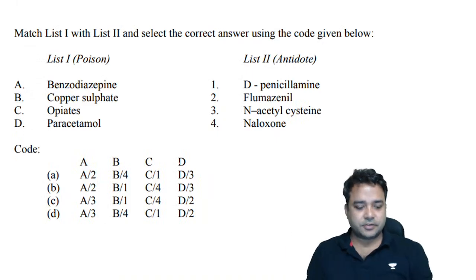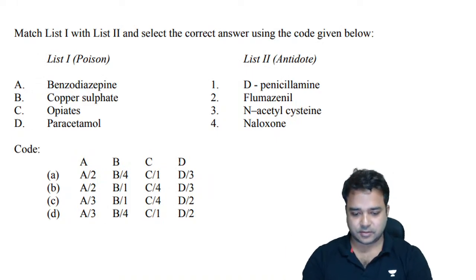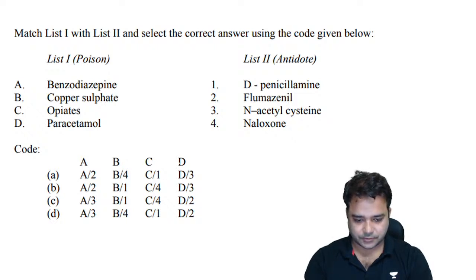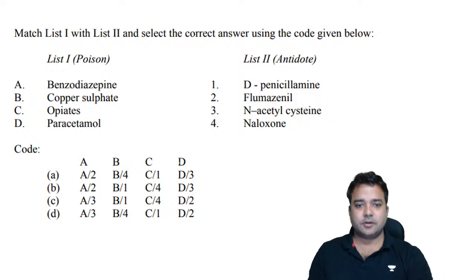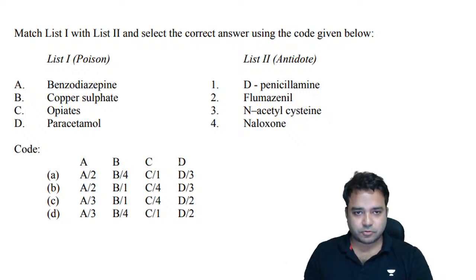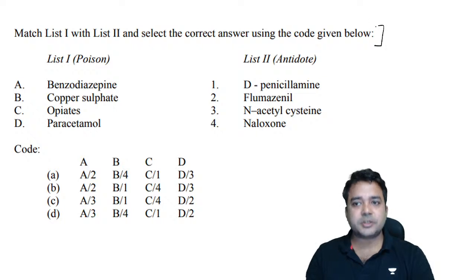Let us start with the first question. They keep on asking questions from antidotes — poison and their antidotes — so this is one topic you need to cover. And not only for UPSC exams, it is important for PG as well as the FMG exam.